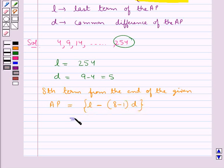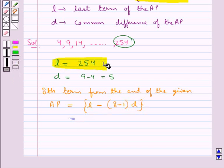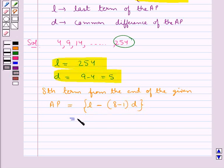Now we put the values for L and d. So we get this is equal to 254 minus 7 into 5, that is 254 minus 35 which is equal to 219.